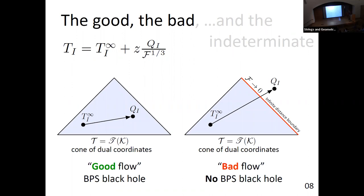BPS black holes exist when the central charge stays positive on the whole flow, for all z > 0. If the attractor point lies inside the cone of dual coordinates — the moduli space from the perspective of dual coordinates — the central charge is positive there, so it's obviously positive everywhere: this is a good flow giving a BPS black hole. By contrast, if Q lies outside a boundary at infinite distance, it's straightforward to prove that the central charge went through zero before you got there, so you do not get a BPS black hole.